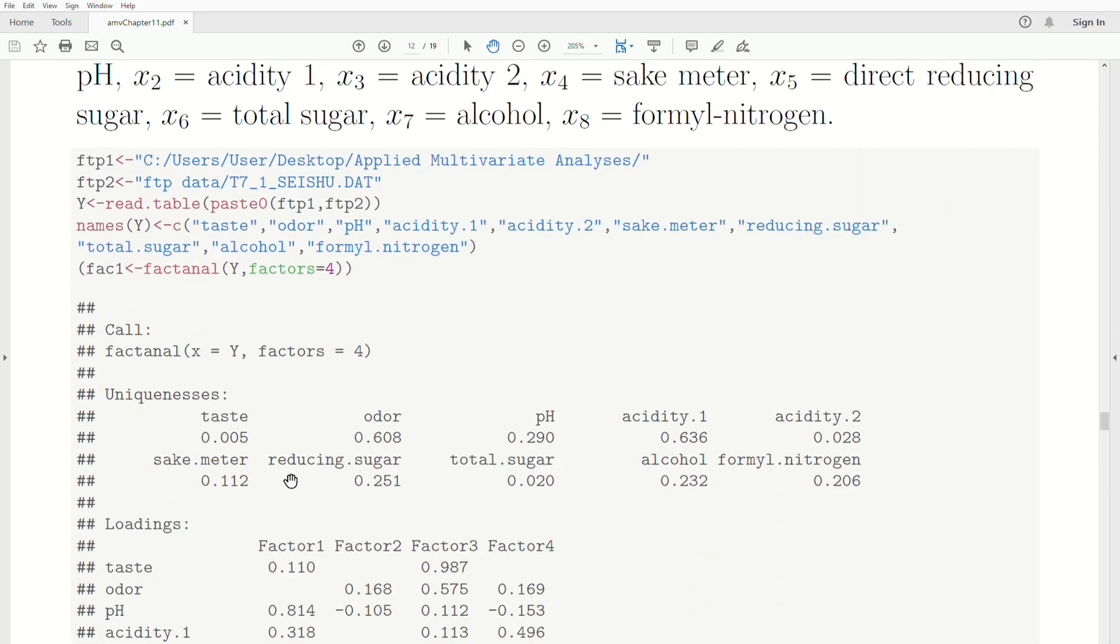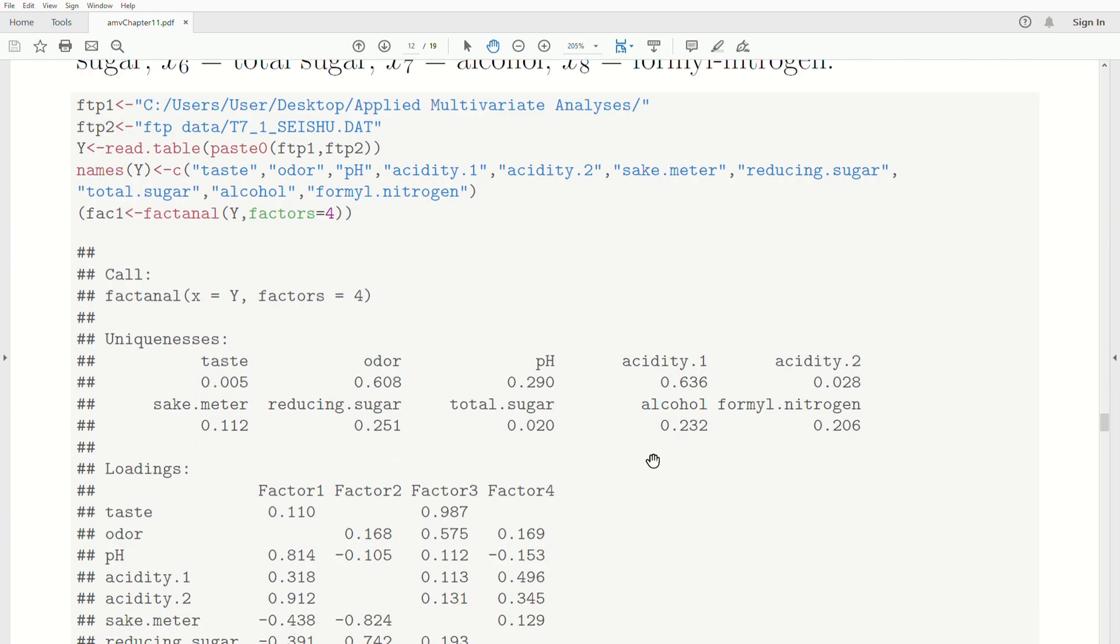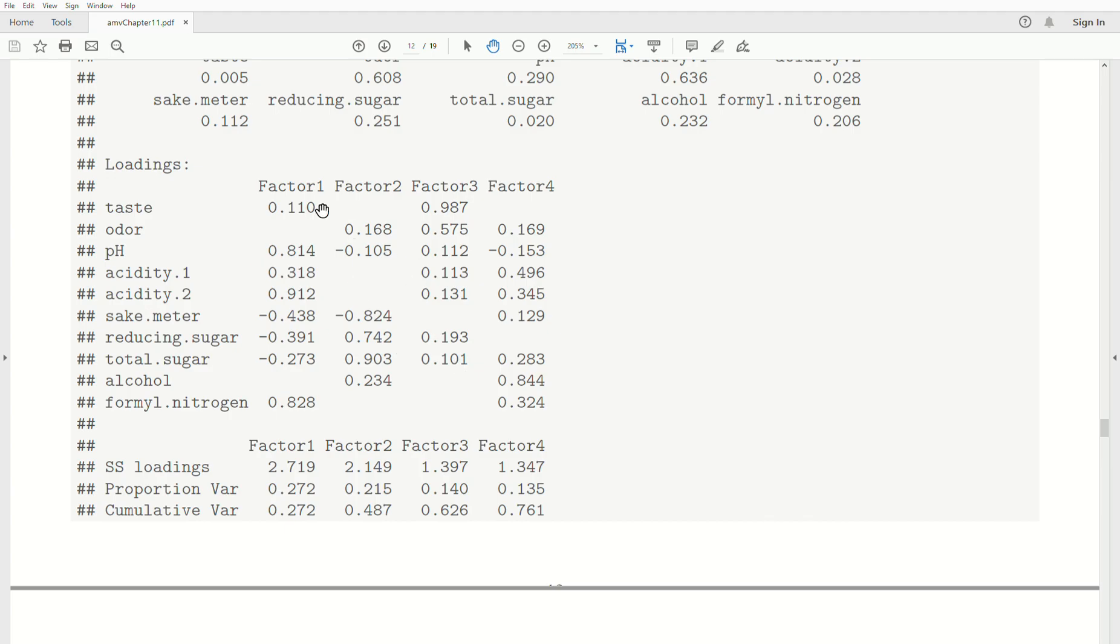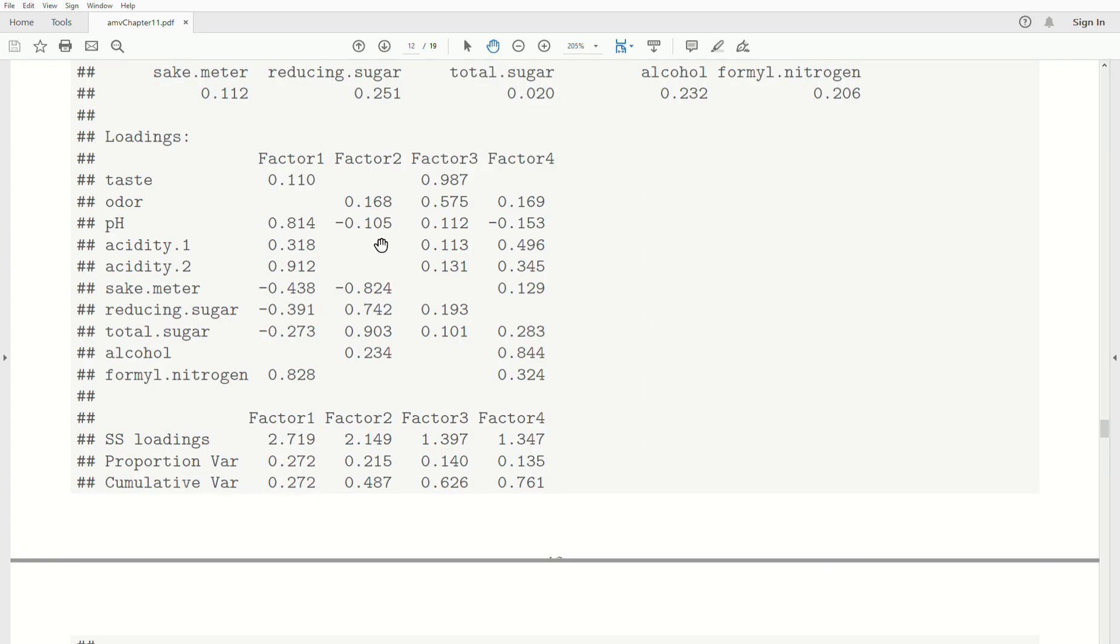These are the results, and these are actually the same results that we get in the previous methods of solving this when we use the principal components method for factor analysis. We get a uniqueness, sometimes called a specific variance, and it's the error terms specific to the variables that we're considering. The loadings for each factor—here we assumed a four-factor model, so there's loadings associated with each of those factors. Notice that R leaves blank any loading that's less than 0.1.